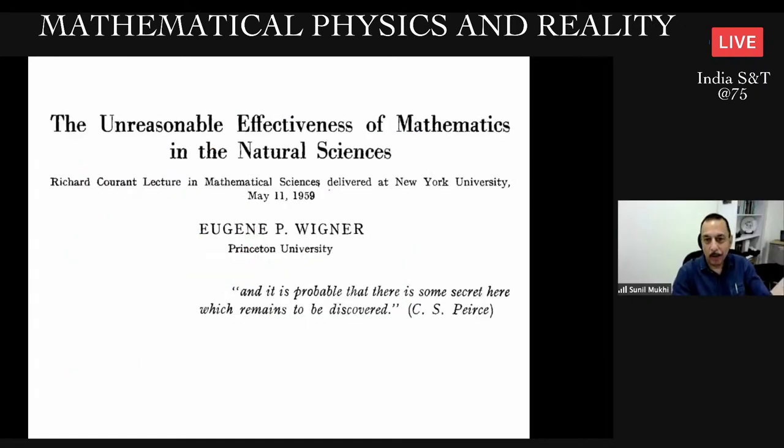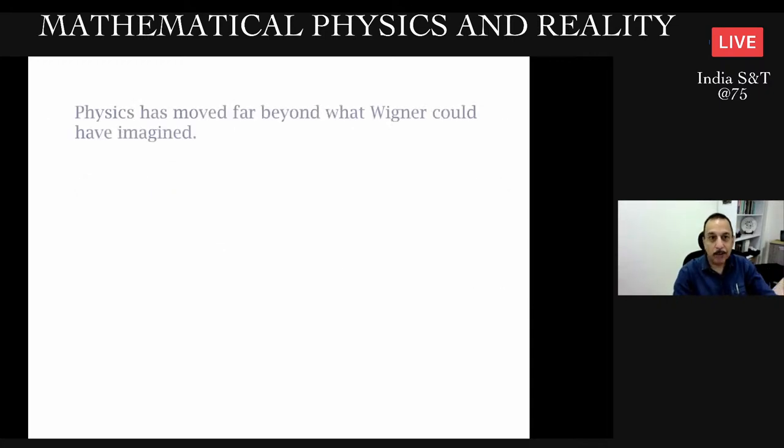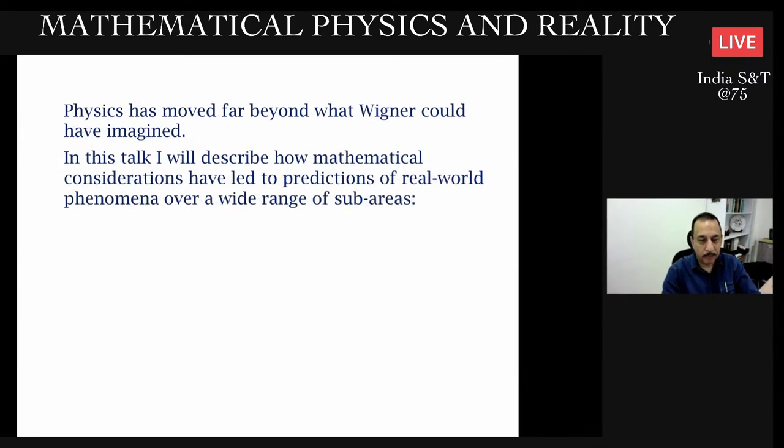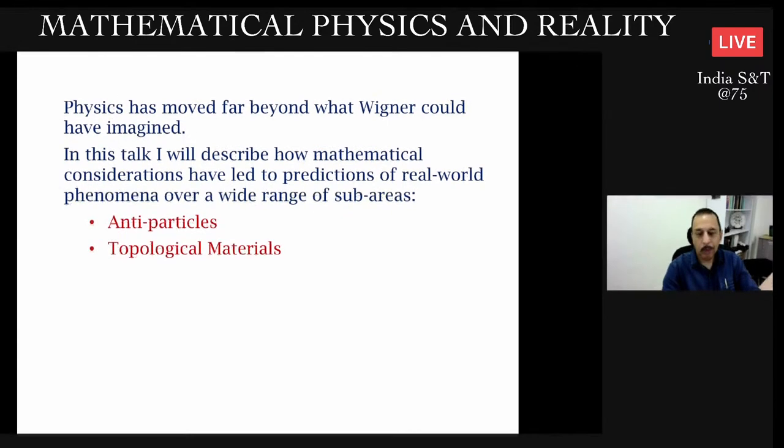The kind of thing I'm going to discuss was first clearly highlighted by Wigner in 1959. He wrote this very influential article called 'The Unreasonable Effectiveness of Mathematics in the Natural Sciences.' Since then, physics has moved far beyond what he could have imagined, proving his point in ways one might not have even imagined. I'll describe how mathematical considerations have led to predictions of real phenomena over a wide range of sub-areas.